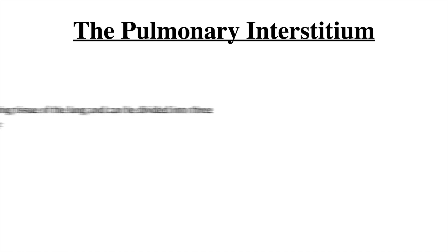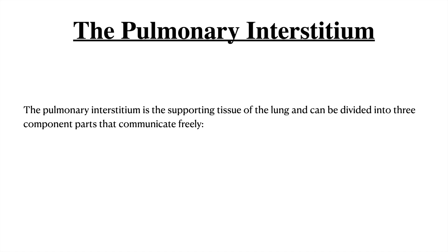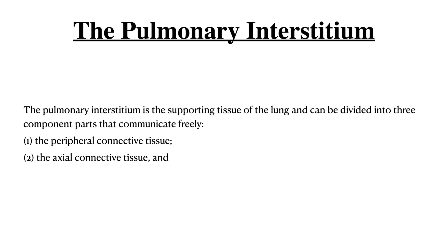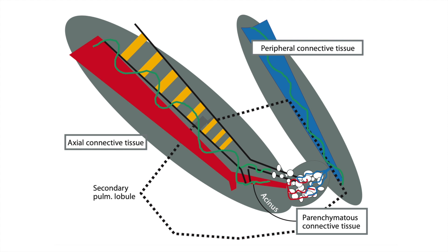Coming to the pulmonary interstitium — the supporting tissue of the lungs — it can be divided into three components that communicate freely. The first is the peripheral connective tissue. The second is the axial connective tissue. The third is the parenchymatous connective tissue. The part that supports the bronchus and the artery is the axial connective tissue. The part which follows the outside of the lungs, the septa, is the peripheral connective tissue. Finally we have the parenchymatous connective tissue inside.